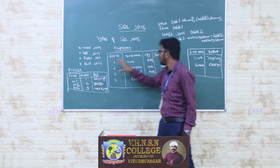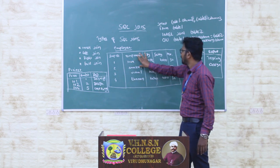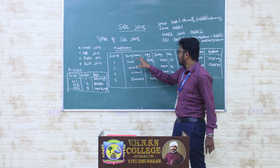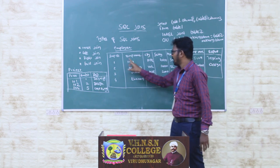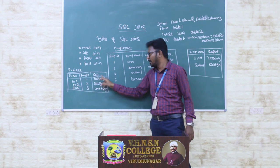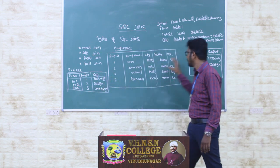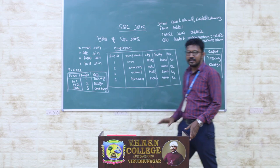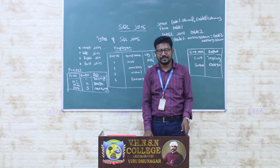The entries we need to retrieve are two records — Siva and Sankar — because Employee IDs 1 and 2 match in both tables. So the result gives us the Employee Name from the first table and the Department from the second table. This information is retrieved using the formula we described. Thank you.